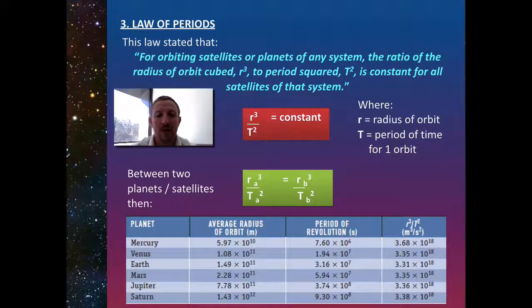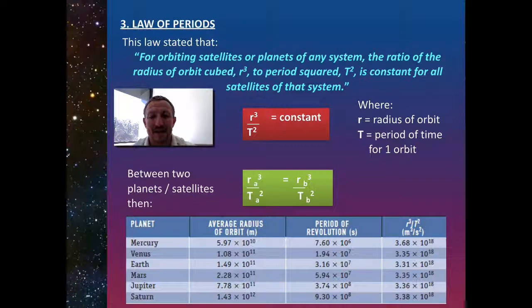Mercury has a radius of 5.97 × 10¹⁰ and a period of revolution of 7.6 × 10⁶. If we do R³ over T², it's 3.68 × 10¹⁸. Compare that to Venus, which has a different radius and period—it's virtually the same figure. Hence, R³ over T² equals a constant for any planet.